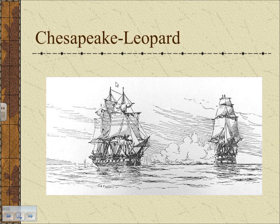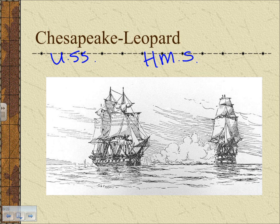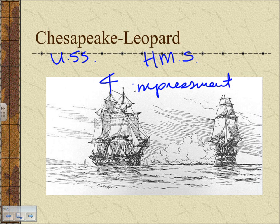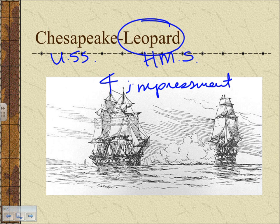The most famous impressment incident is the Chesapeake-Leopard affair. The HMS Leopard demanded that the USS Chesapeake allow British officers on board to check for deserters. The Chesapeake refused, and the Leopard fired upon her, killed several men, boarded anyway, and took four men for impressment. This specific event is significant because it happened very close to the American shoreline — up close and personal for many Americans. The British had attacked us in our own waters, which was basically an act of war, giving this event powerful symbolic representation of impressment overall.